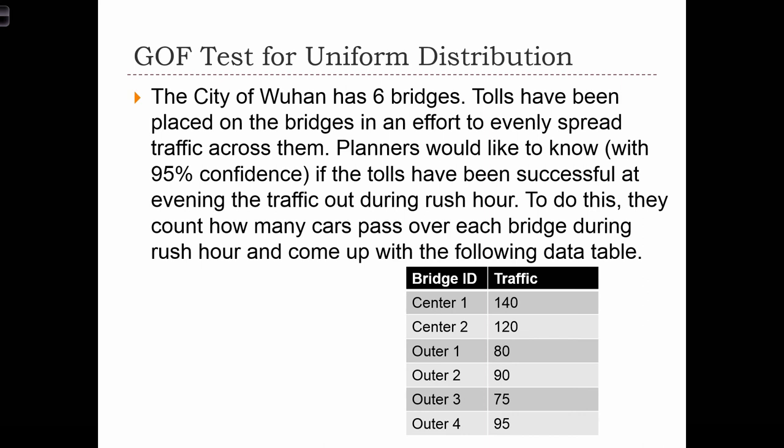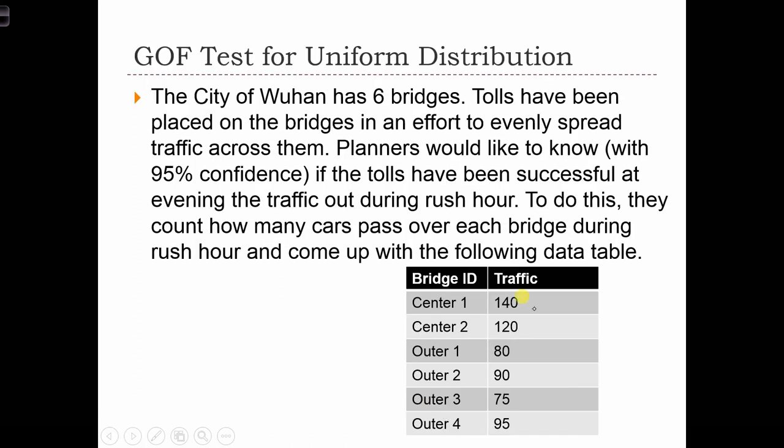So in this table, we have six bridges. There are two bridges downtown in the center of city and four bridges that cross the river further outside of town. For each bridge, we've documented the traffic count. In order to use a goodness-of-fit test for a uniform distribution, what we are doing is to see if these counts are uniform, to see if each bridge has the same amount of traffic.